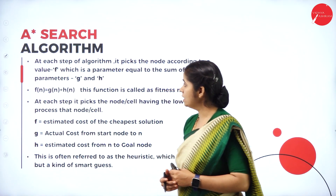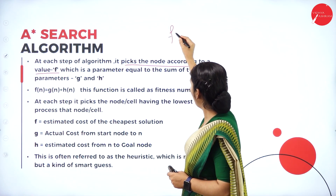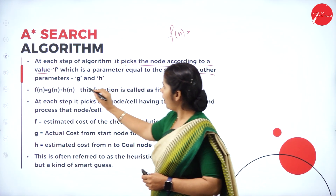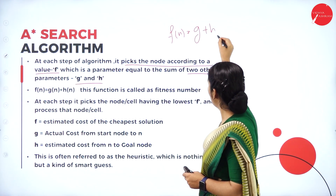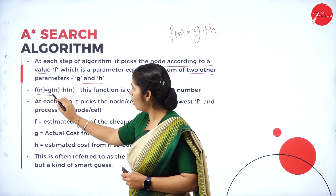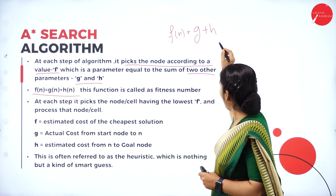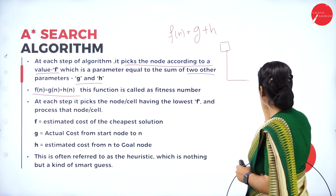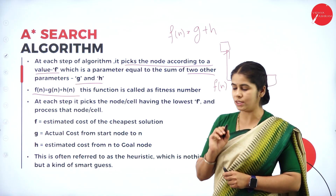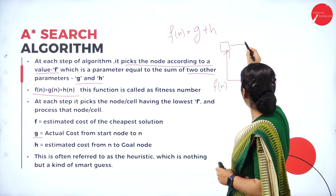In the A* algorithm, at each step the algorithm picks the node according to the value f. We have to find the value f for each node, which is a parameter equal to the sum of two other parameters: g plus h. So we calculate each node as f(n) = g(n) + h(n). What is f(n)? f(n) is the estimated cost of the cheapest solution — that is, the cost required to reach from this node to the goal state. What is g(n)? g(n) is the actual cost from the start node to reach some intermediate node.